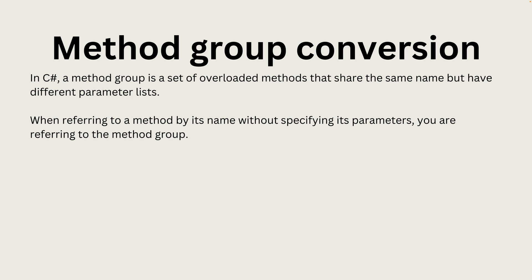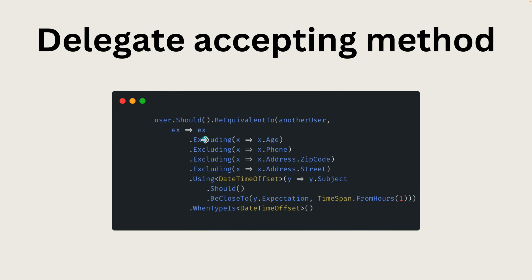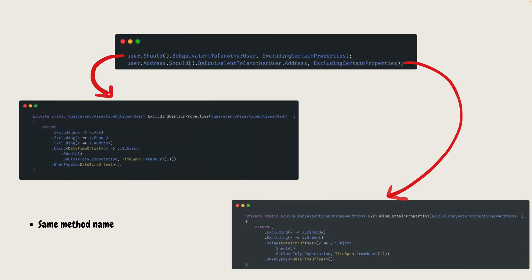Method group conversions are very handy when used within delegates — referring to a method group instead of the complex delegate code itself. As you can see in this particular method, the BeEquivalentTo method is used to verify another user by excluding certain properties and verifying how they actually work.